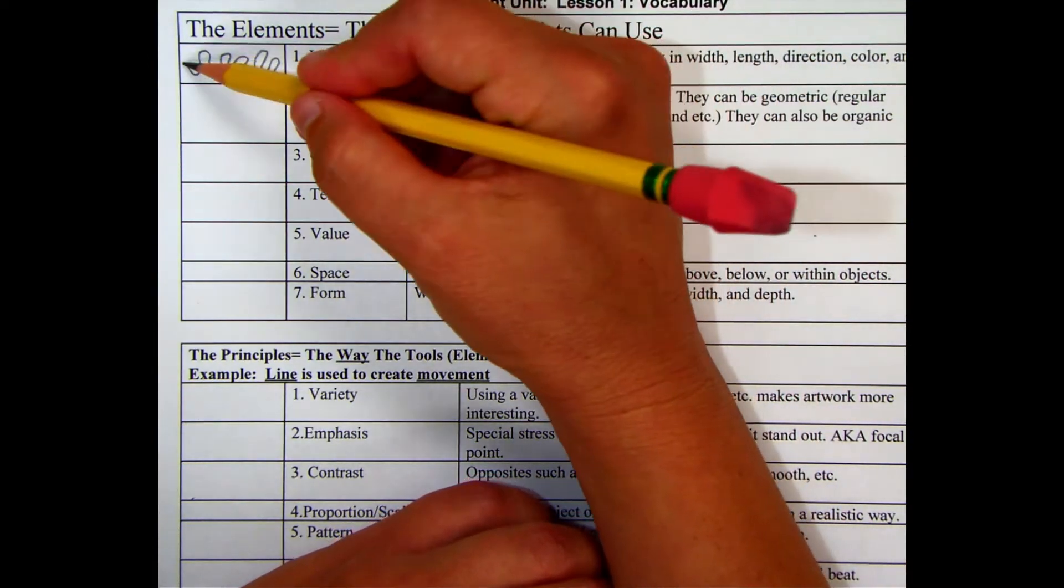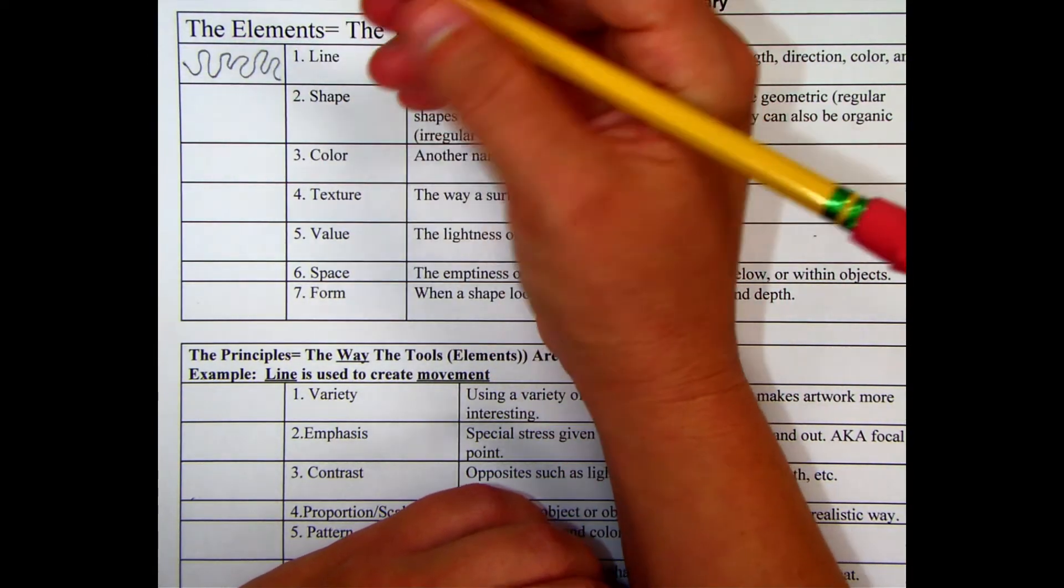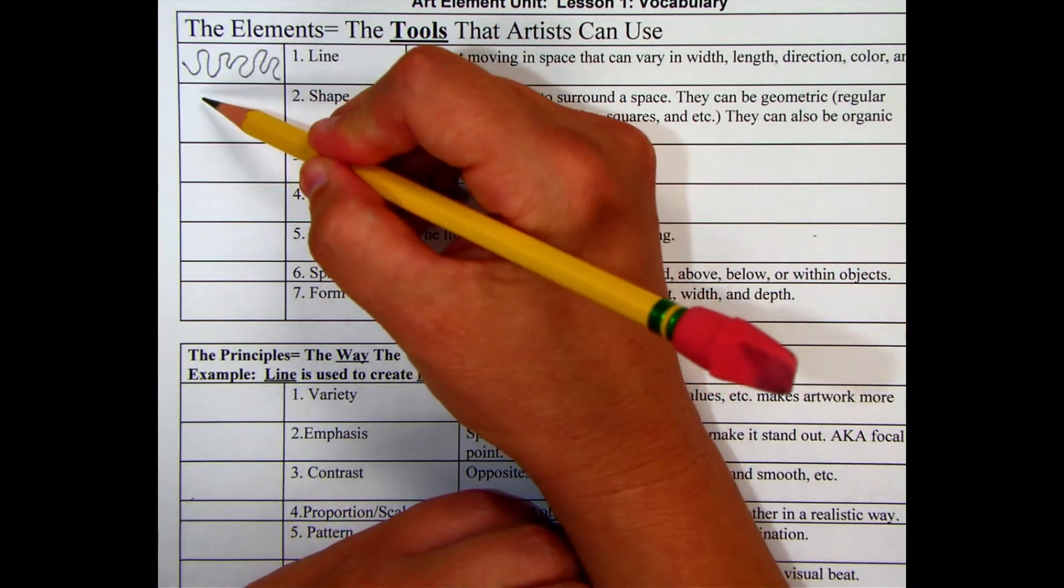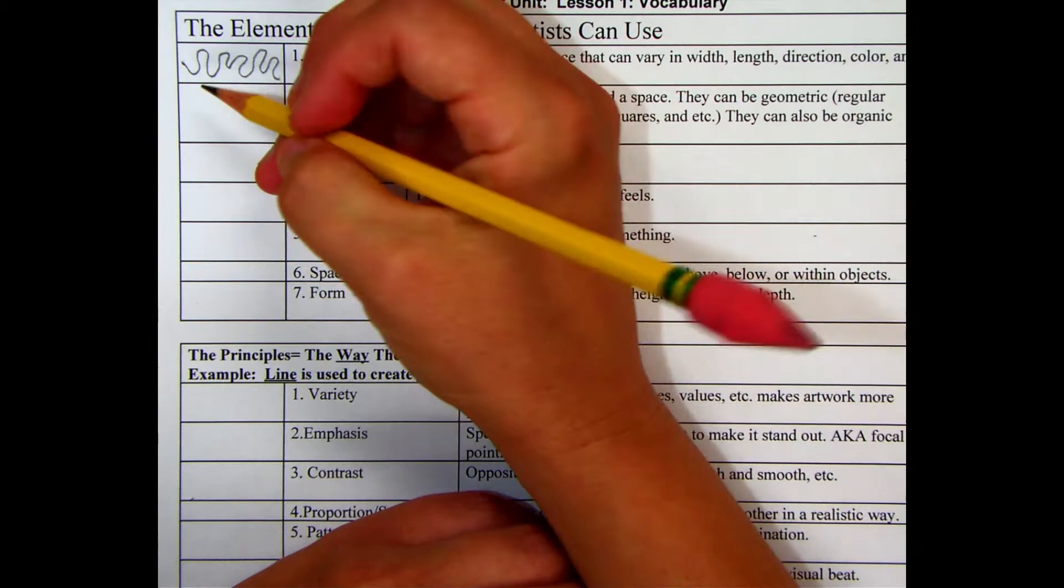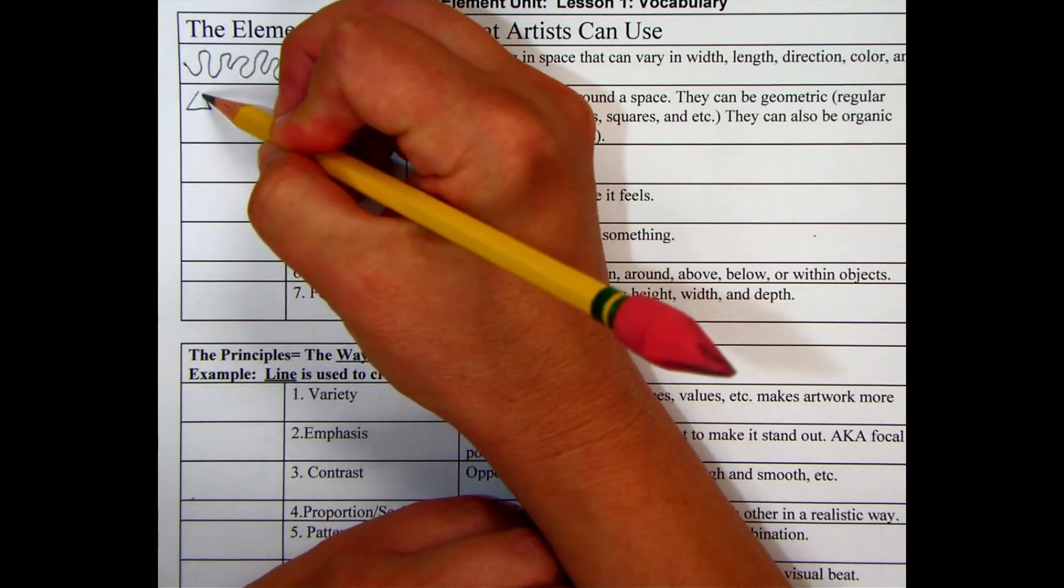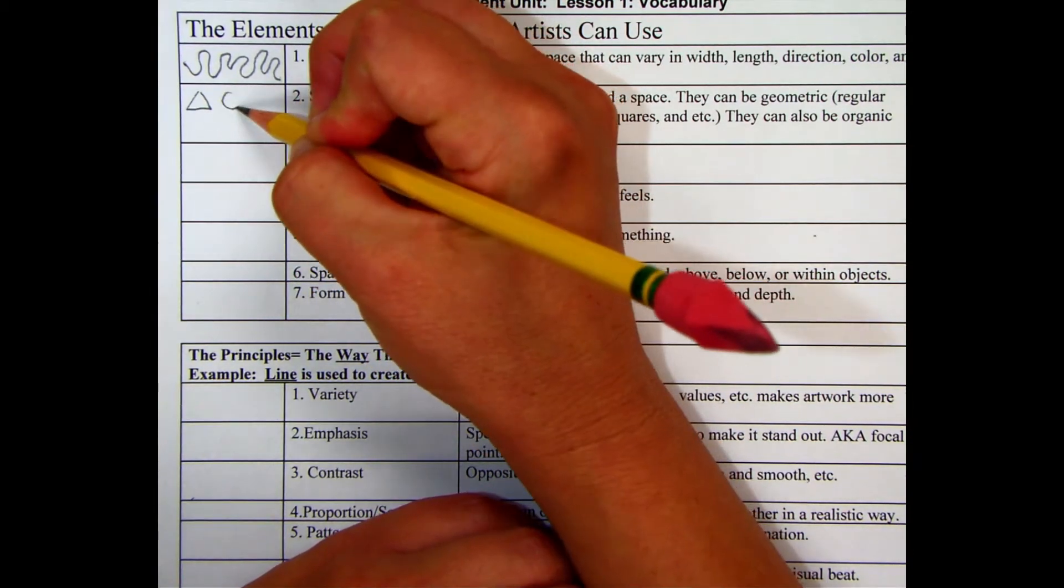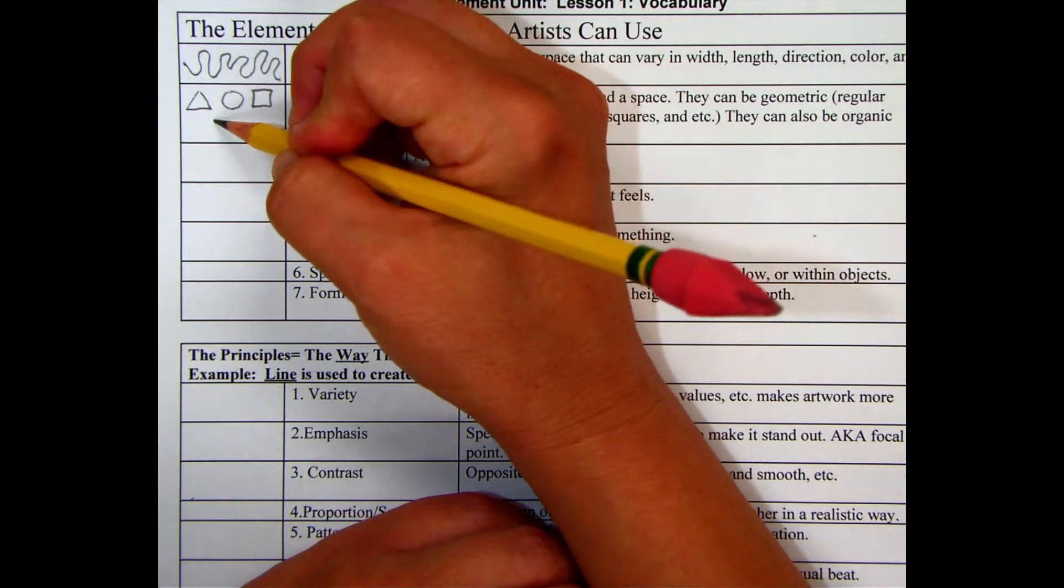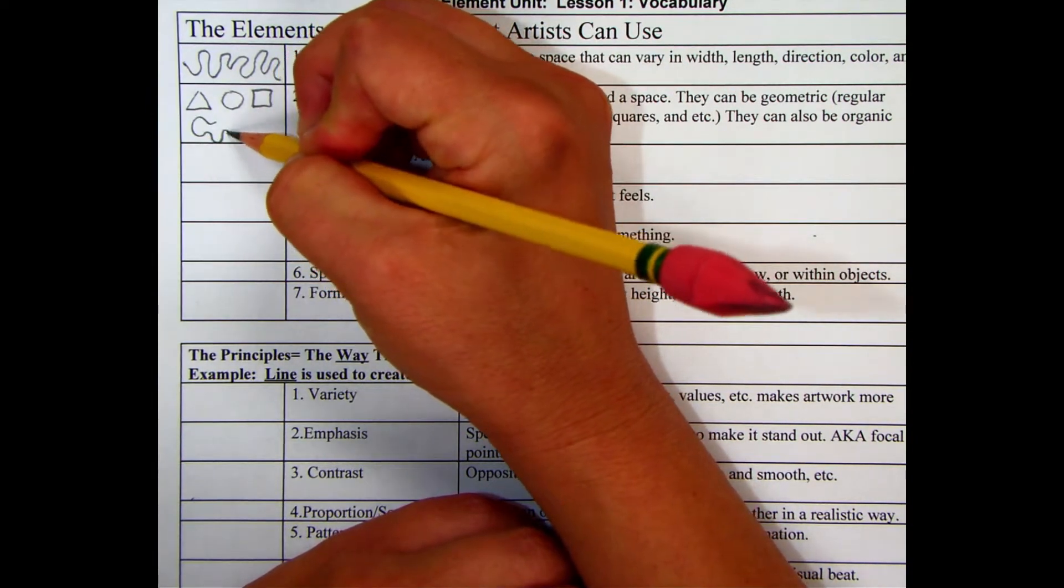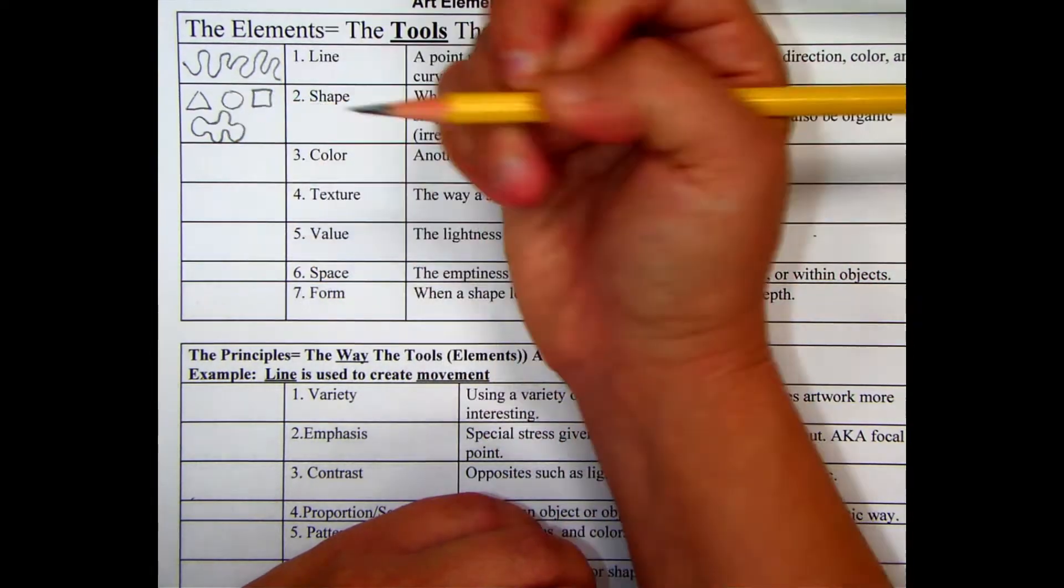Shapes are when those points intersect back together with each other. You have organic and you have geometric shapes. Geometric shapes are like the ones that you would see in math class, triangles, circles, and squares. Organic shapes are free-flowing, unpredictable shapes.